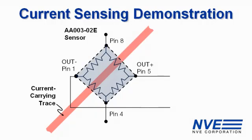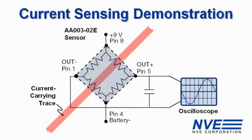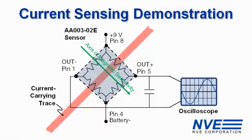For the demo, the sensor is powered by a battery connected to an oscilloscope. The sensor is oriented so that the direction of the sensitivity is perpendicular to the current carrying trace. For this demonstration, we're using a 0.09 inch, 2.3 millimeter trace width, which can carry up to 10 amps.